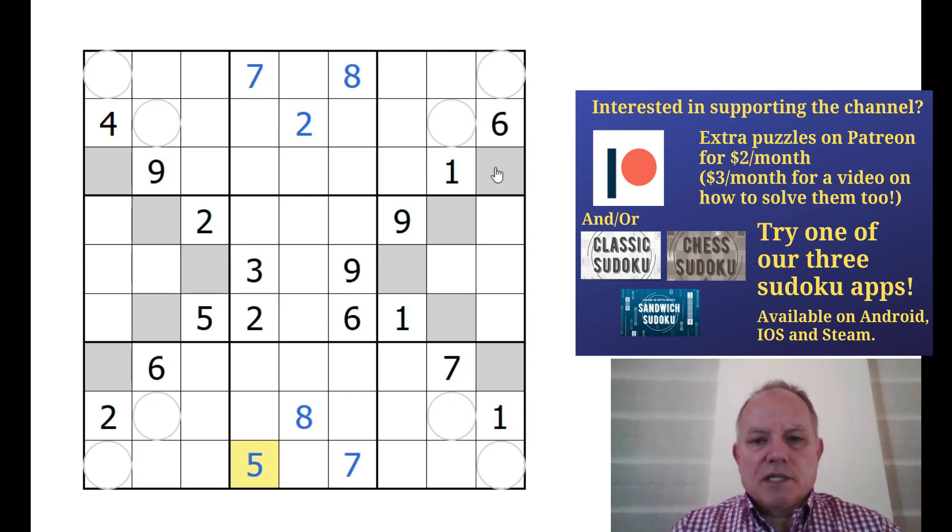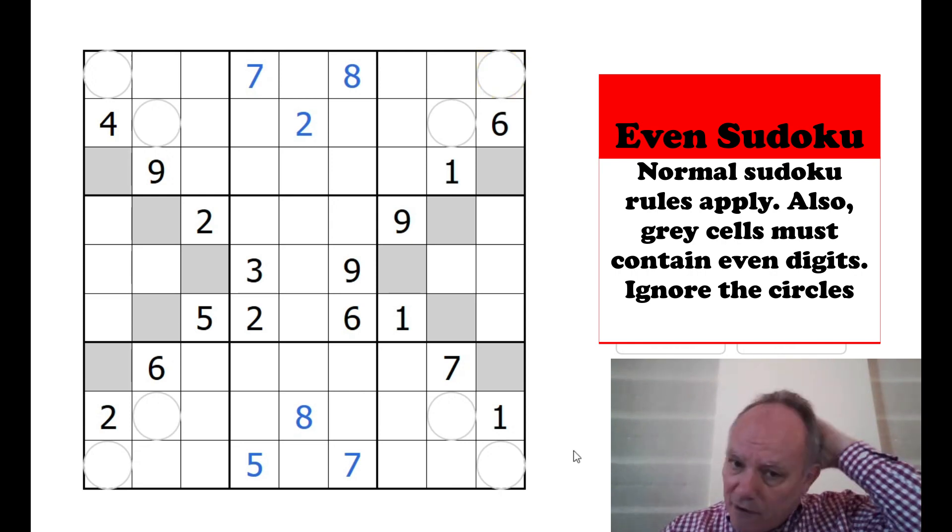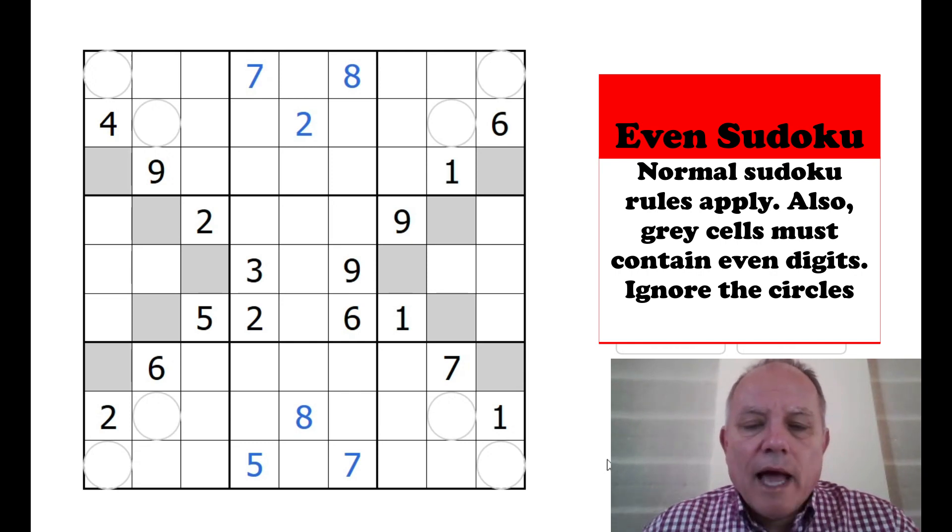Also, any grey cell in the puzzle must be an even digit. So two, four, six or eight in all of the ten marked grey cells, which is a useful constraint in many ways. Now remember we can ignore for the purposes of this solve the circled cells, they're only there so that we can carry four digits into tomorrow's puzzle and when I've solved tomorrow's puzzle, assuming all goes well.